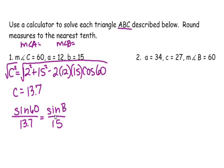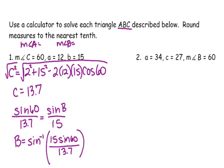And then I'm going to go ahead and solve this. So B, because I'm looking for the angle, is going to be the inverse sine of 15 sine 60 divided by 13.7. And I'm going to go ahead and type this all into my calculator.